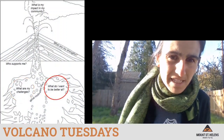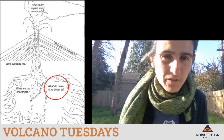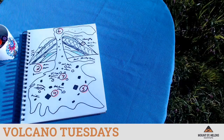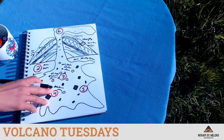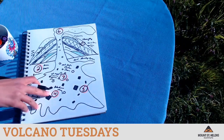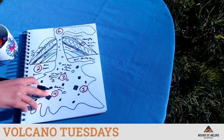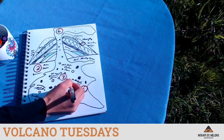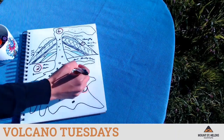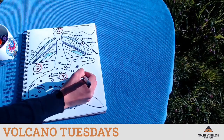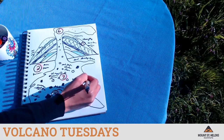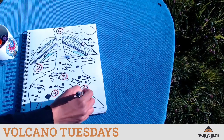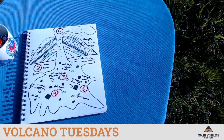The next element is our magma chamber itself. For this, we are going to answer the question: what do I want to be better at? Flipping over to my drawing in number five, I'm going to think about things I want to be better at — maybe this includes some of my challenges, but maybe these are totally separate. I want to be better at understanding how volcanoes work, understanding what's happening underground inside magma chambers, and I want to be a stronger communicator of all of this information.